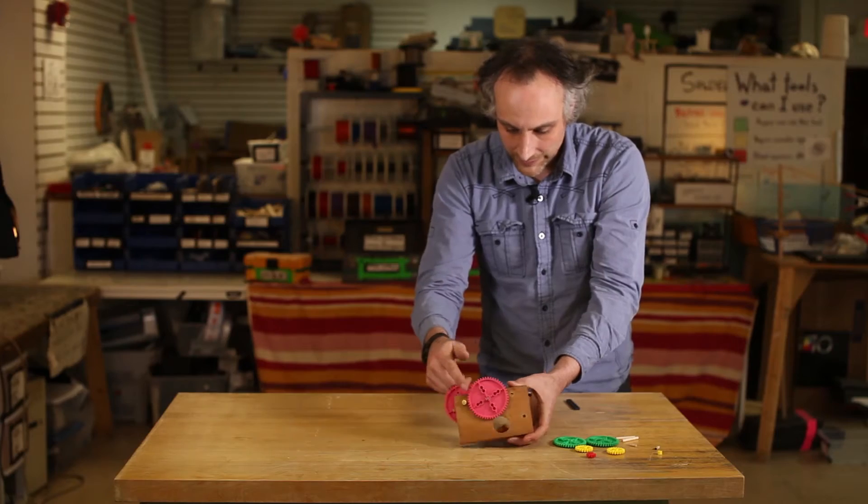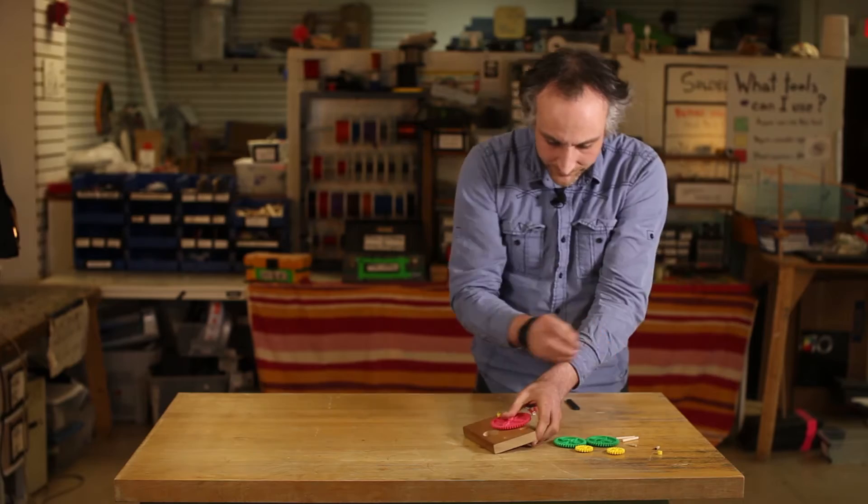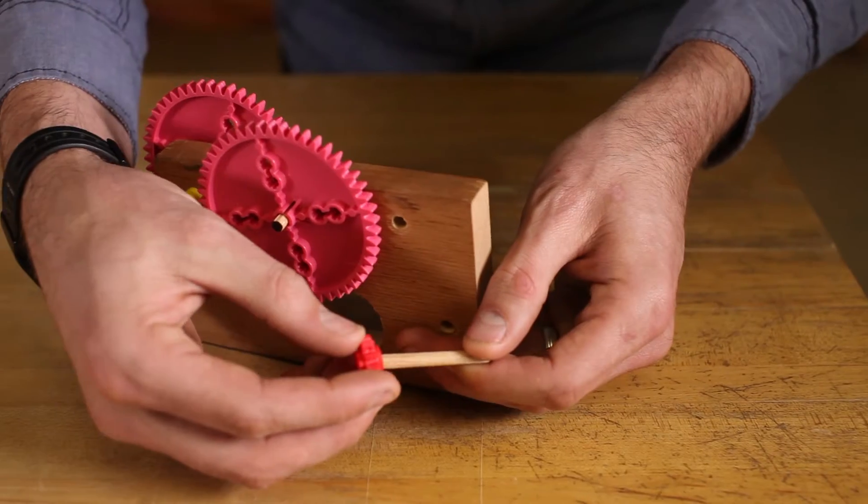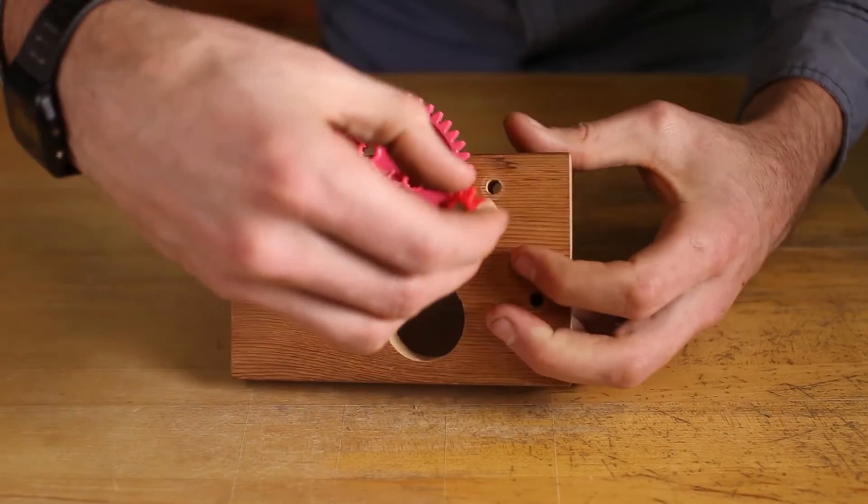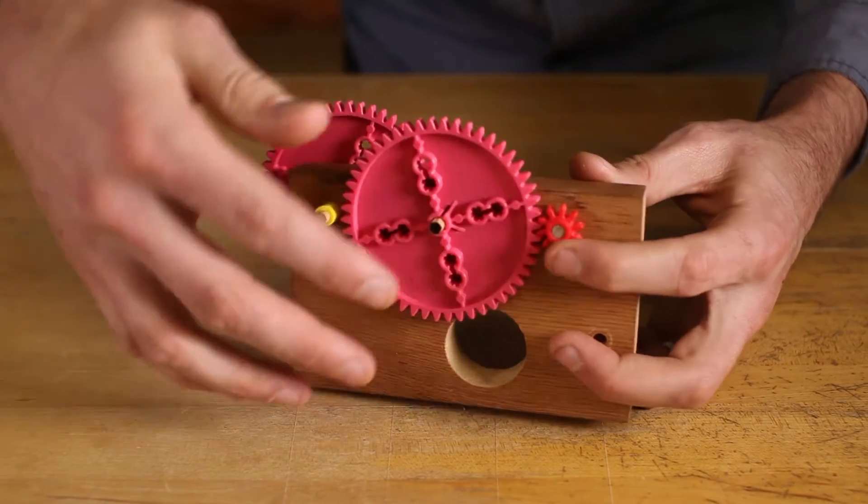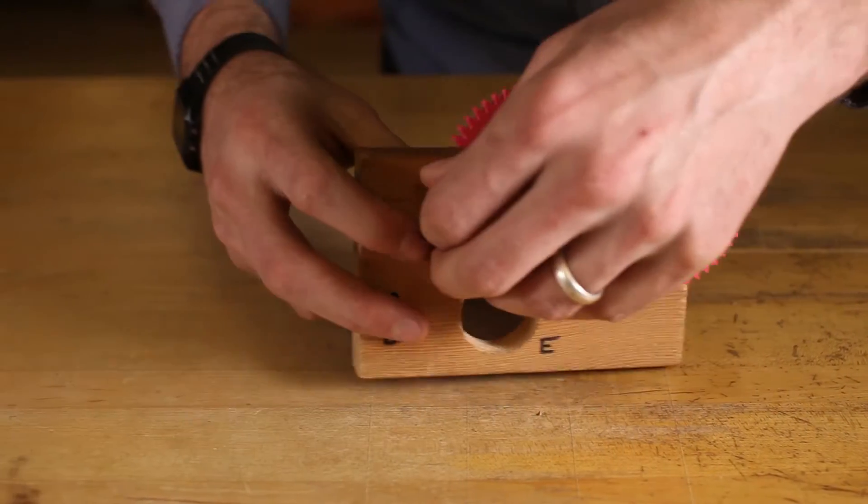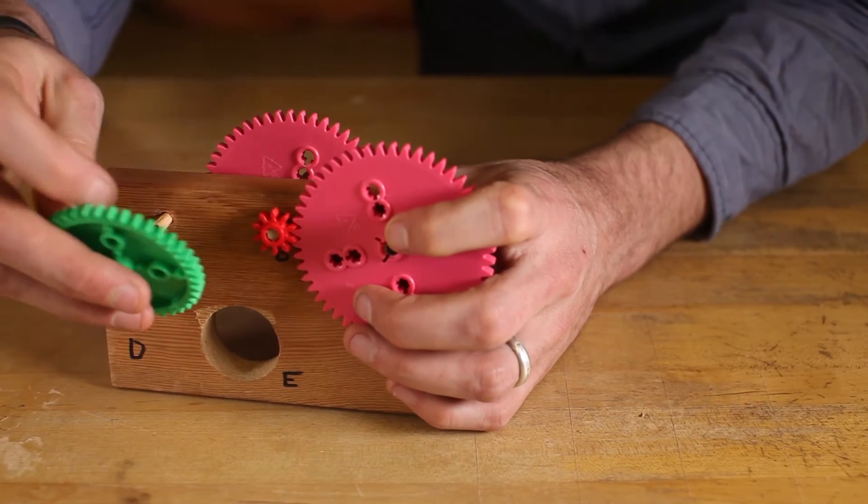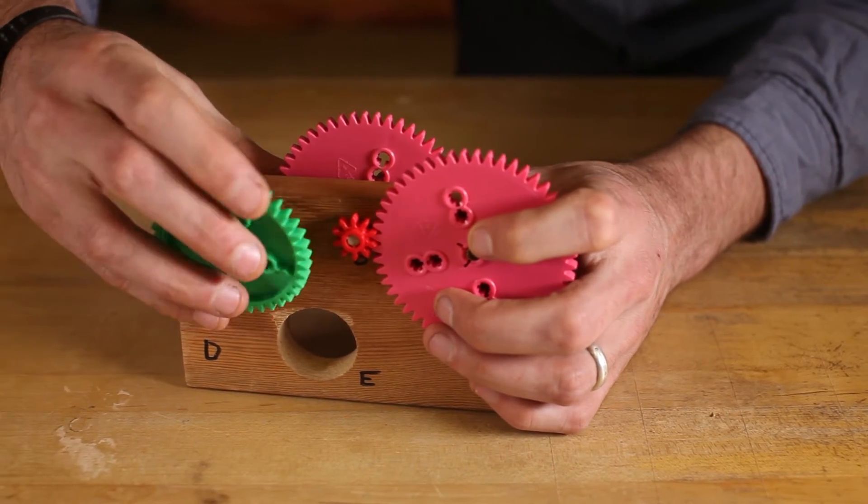So now I can set it up on the other side, going to take another small 10-tooth gear interfacing with this larger 50-tooth gear on one side. And on the other side, we're going to have one of these medium-sized gears, I think it's a 40-tooth.